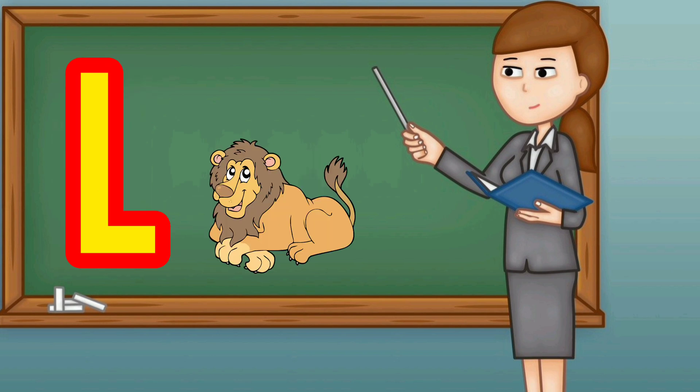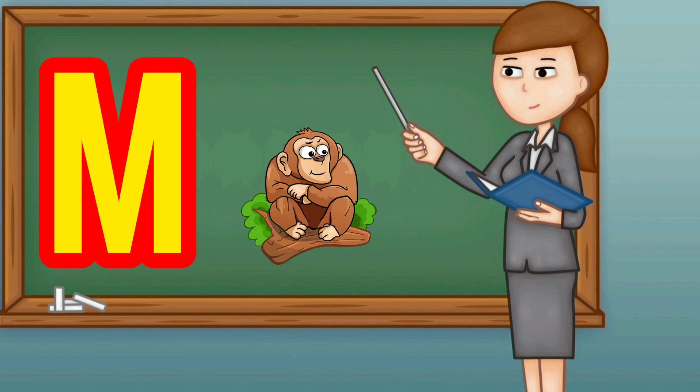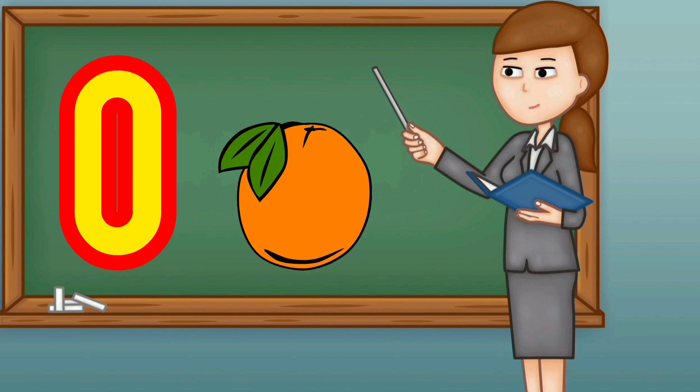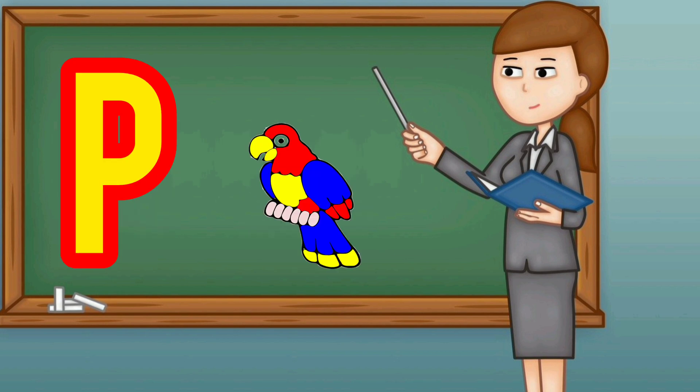K for kite, L for lion, M for monkey, N for next, O for orange, P for parrot.